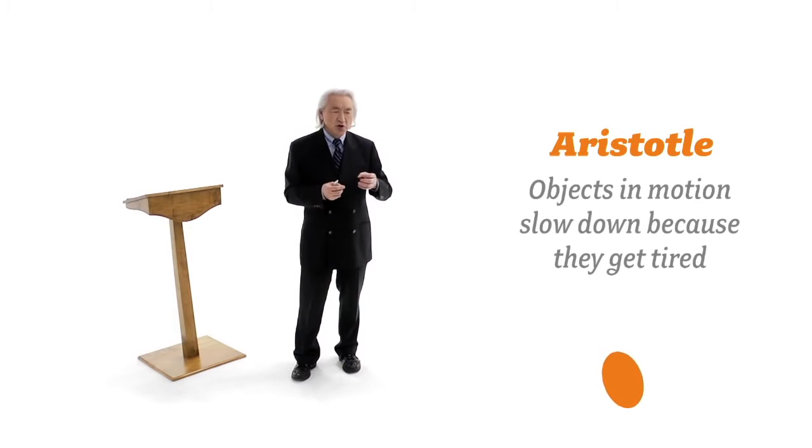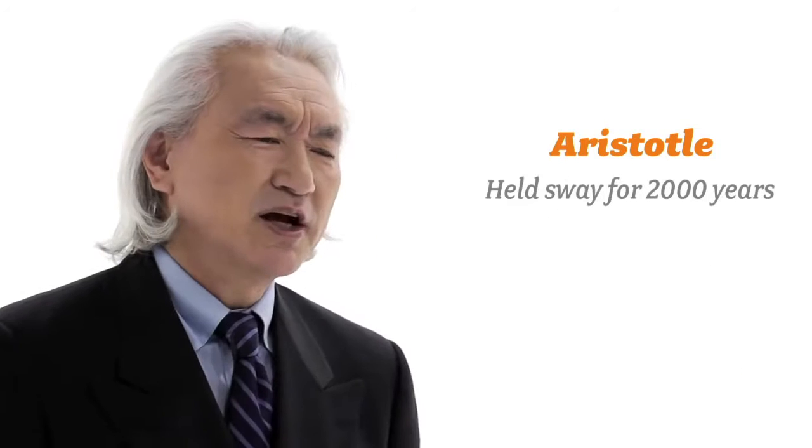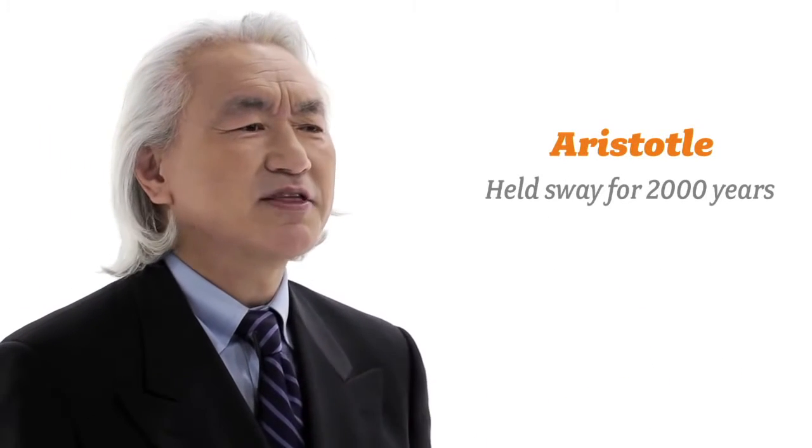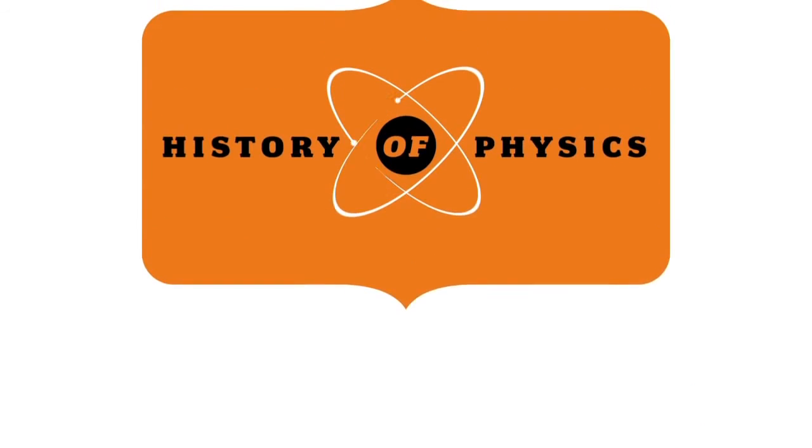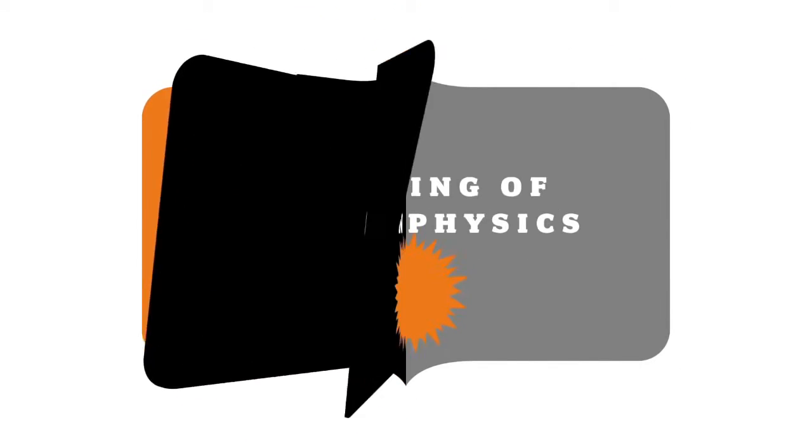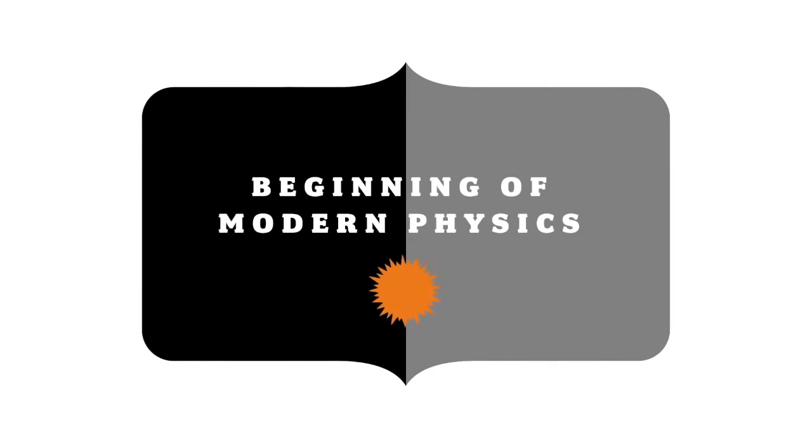And why do objects slow down when you put them in motion? Objects in motion slow down because they get tired. These are the works of Aristotle, which held sway for almost 2,000 years until the beginning of modern physics with Galileo and Isaac Newton.